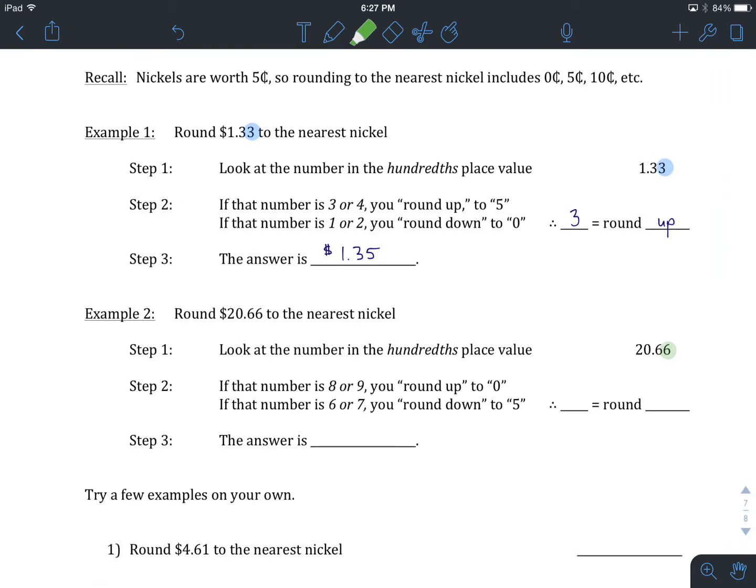We've passed 5. Now the question is, are we closer to 5 or are we closer to 10, which would be rounding up? If that number is an 8 or a 9, so closer to the 10 that you would get if you were to count up from 5, then you'd round up to 0, which is really a 10 in this case. If that number is a 6 or a 7, then you would round down to a 5.